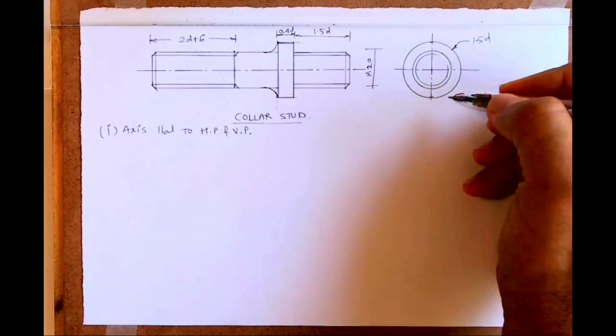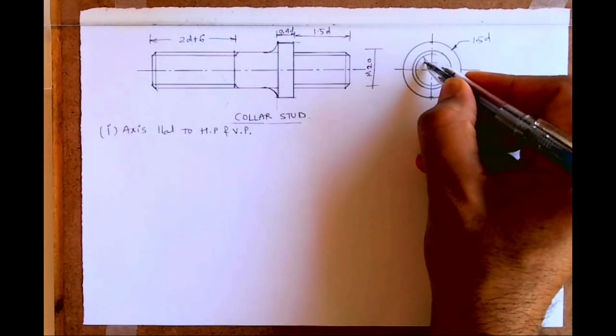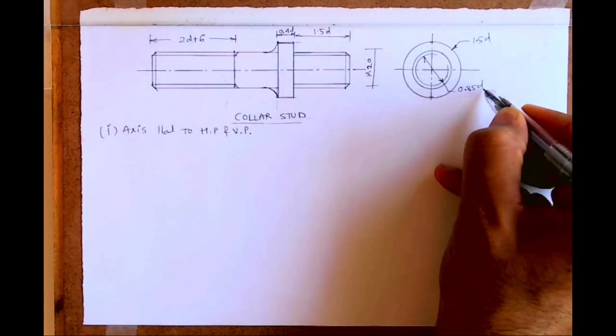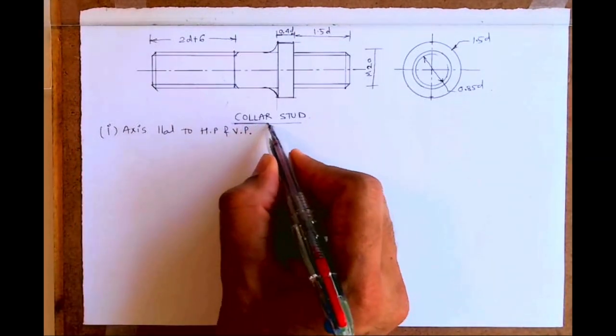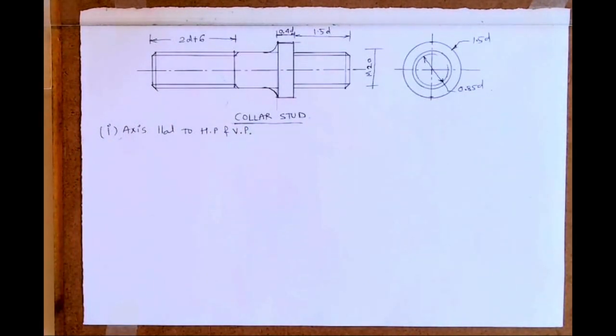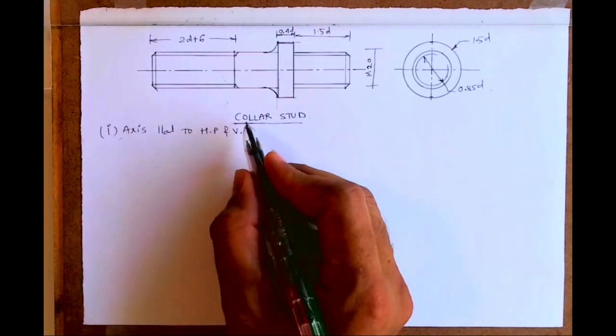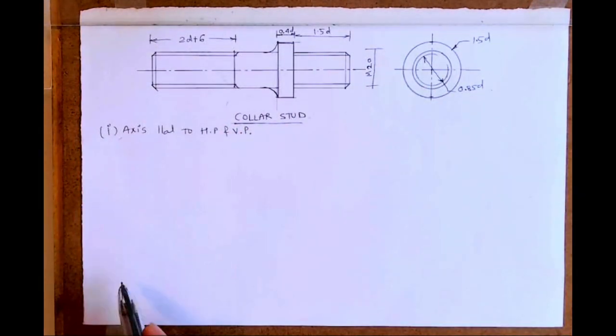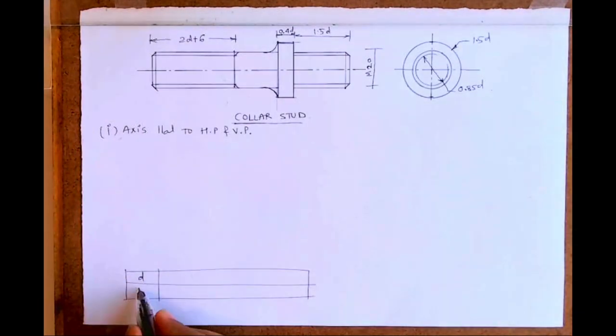This is 1.5D, the inside one is 0.85D. So we'll draw this collar stud freehand. First, we will draw a box. We need to draw front view and side view, so we'll find out all the values of D.